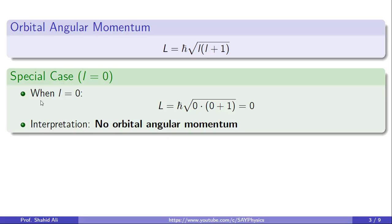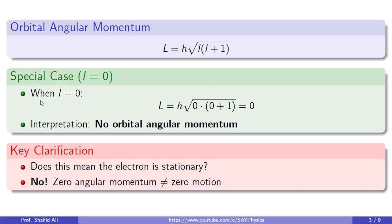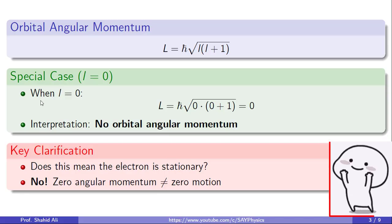But here is the key point, and it often causes confusion. Does this mean the electron is stationary? Absolutely not. Zero angular momentum does not imply that the electron has stopped moving. It simply means there is no rotational or orbital angular momentum around the nucleus. The electron still has kinetic energy and dynamic behavior, but it does not carry angular momentum in the classical sense. This distinction is crucial and will be unpacked further in the next slides.